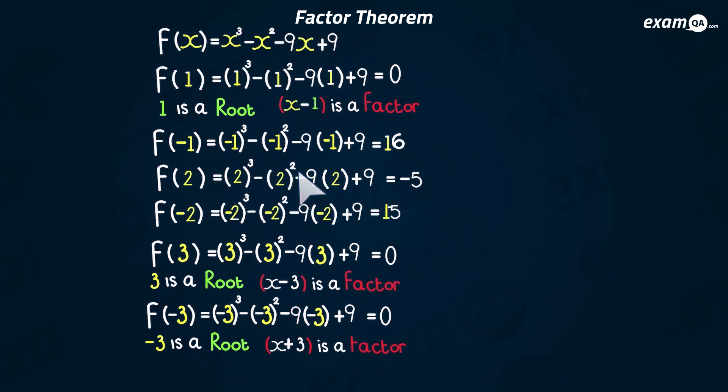If you look at minus 1 as well, when we put minus 1 in, it didn't come out as 0, which means x plus 1 is not a factor. But when we put minus 1 in, we've got 16, which means if you've got your function and divided it by x plus 1, then the remainder should be 16.